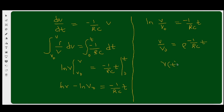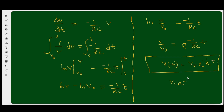Therefore, v(t) = V₀ · e^(−t/RC). This is the natural response for an RC circuit. Comparing to the form V₀ · e^(−t/τ), the time constant for an RC circuit is τ = RC, while for an RL circuit it is τ = L/R. Note that for an inductor, current is the key parameter since inductors oppose changes in current, whereas for a capacitor, voltage is the key circuit parameter.